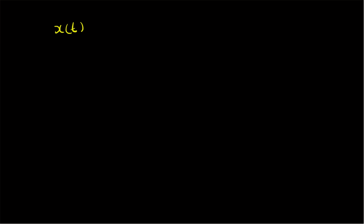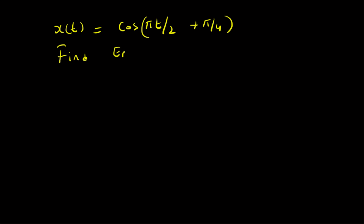Hello, welcome. In this short video, let us look at the calculations of energy and power for a given signal. We will also learn how to do the same calculations using MATLAB. Consider the following signal x(t) = cos(πt/2 + π/4). This x(t) is basically a periodic signal, and now we want to find the energy and power of the signal.